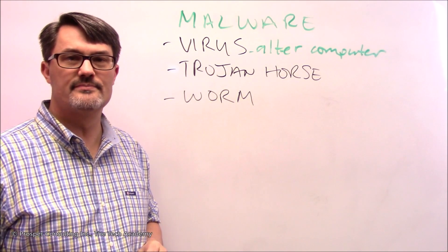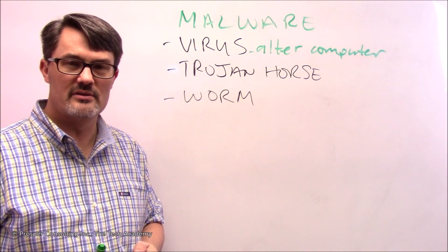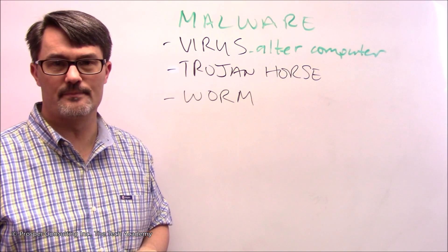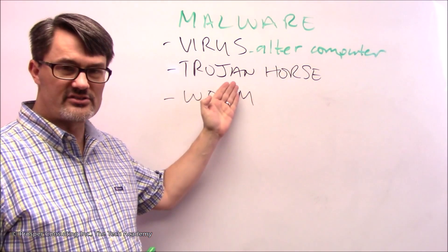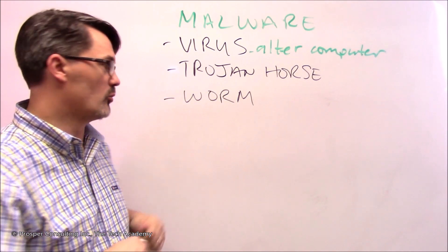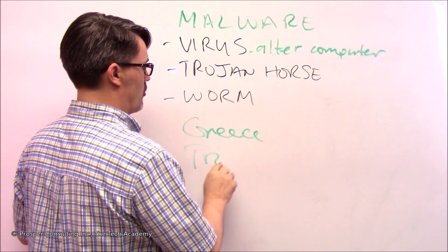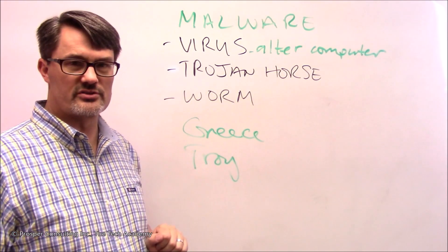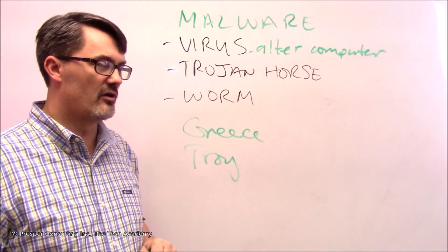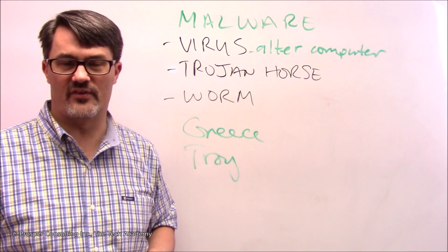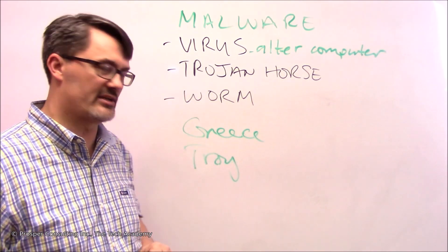Now let's discuss a Trojan horse. As background, the Trojan horse is a famous item from history. Thousands of years ago, two countries were fighting - one was Greece and one was Troy. Greek soldiers had been attacking Troy for years, but Troy, a very heavily fortified city, had resisted the attacks of the Greeks.